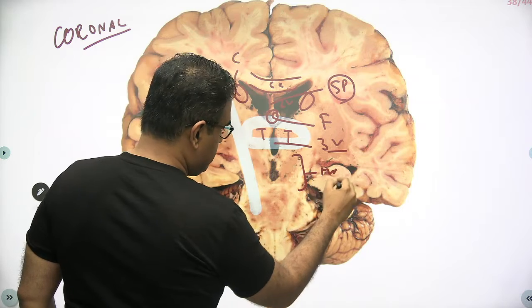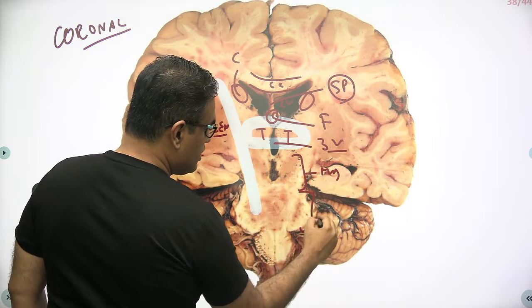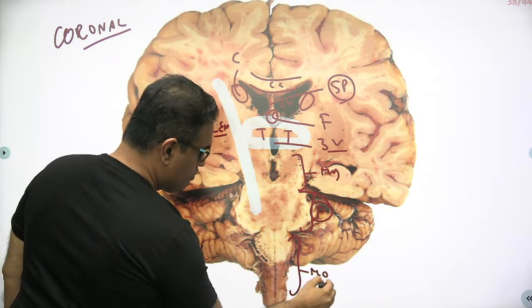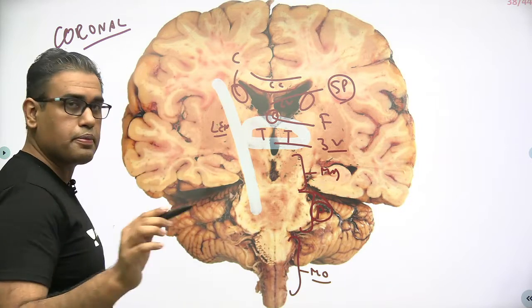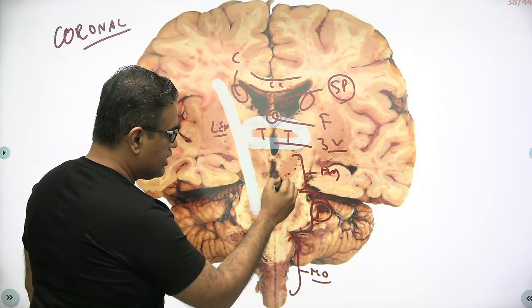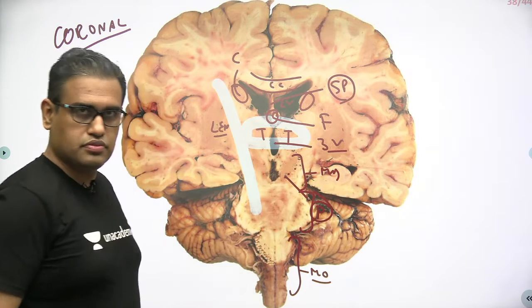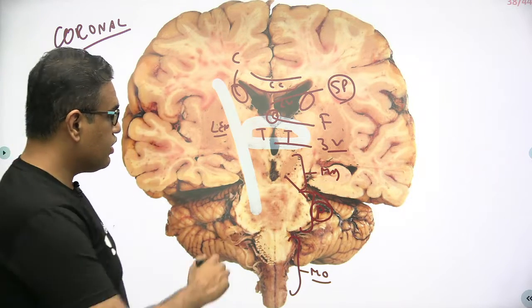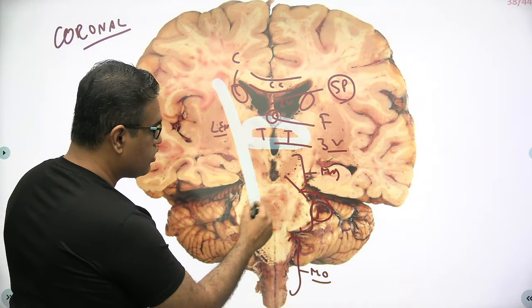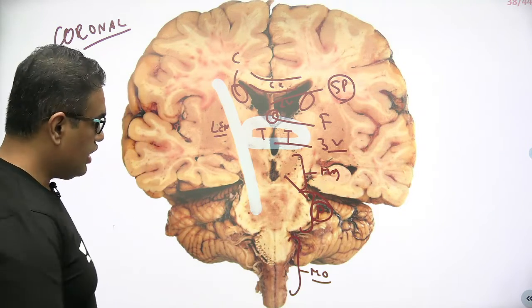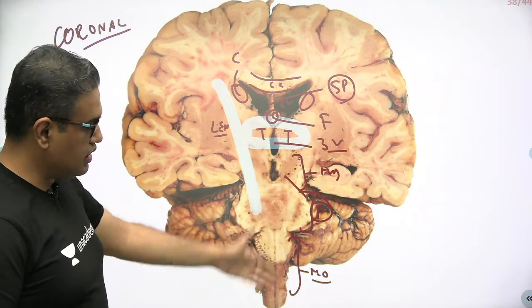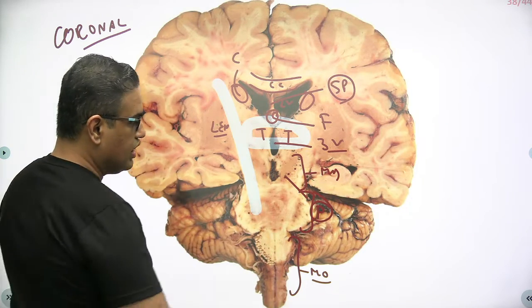This area is the midbrain. This thickened area is the pons, and below that is the medulla oblongata. In the midbrain you have this darkened area known as the substantia nigra. In the pons you can see the pontocerebellar fibers and the various pontine nuclei.